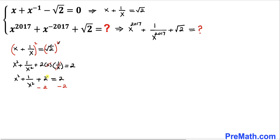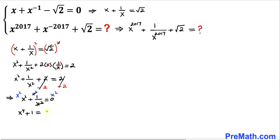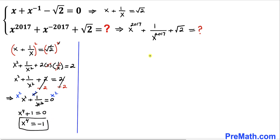Subtracting 2 from both sides, we get x square plus 1 divided by x square equals to 0. Multiplying through by x square, we get x power 4 plus 1 equals 0. Moving 1 to the other side, our x power 4 value turns out to be negative 1.